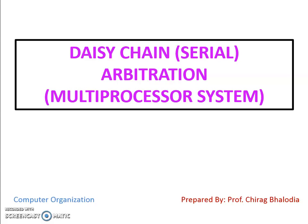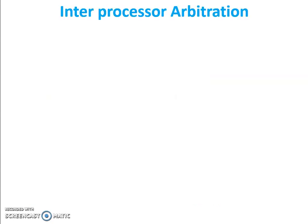Hello friends, myself Chirat. Today I am going to discuss daisy chain arbitration or serial arbitration from the multiprocessor system topic of computer organization and architecture. First of all, inter-processor arbitration: during a multiprocessor system, when more than two processors access the system bus, arbitration gives priority — determining which processor gets first priority to access the system bus.